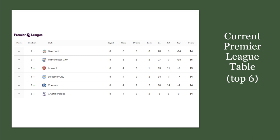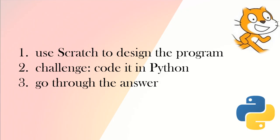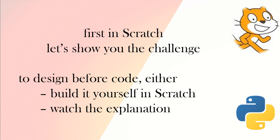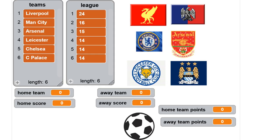As an example we can use the current English Premier League — here are the top six teams: Liverpool, Manchester City, Arsenal, Leicester, Chelsea and Crystal Palace. We're going to use Scratch to design the program and your challenge is to code it in Python. We'll go through the answer after the design. First we'll show you the challenge in Scratch, then you can either build it yourself or watch our explanation to see the design. Your challenge is to write the Python code. There are of course many ways to do this, but let's look at how we did it in Scratch.